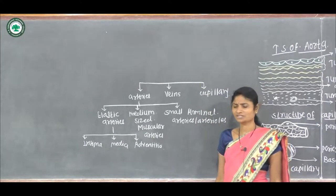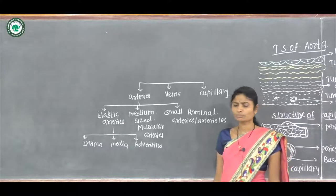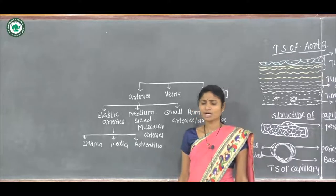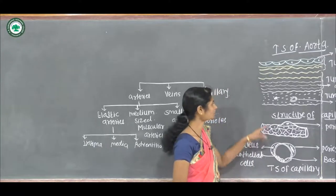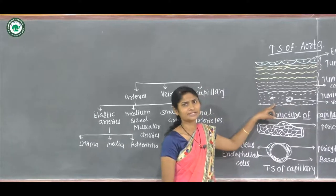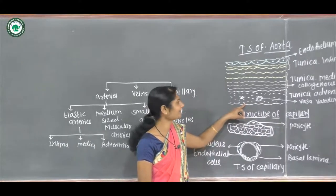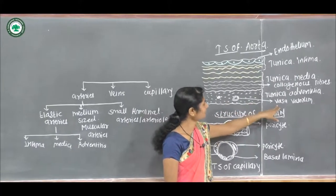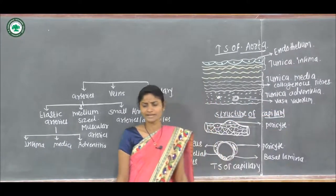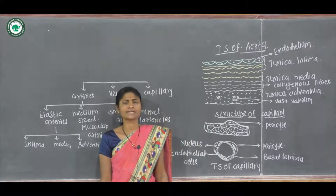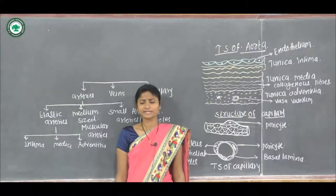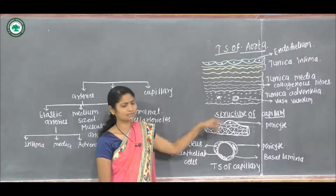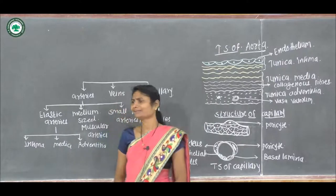Large arteries need their own blood supply, so the adventitia layer contains blood vessels called vasa vasorum. These vasa vasorum form capillaries and give nourishment to the arterial wall.